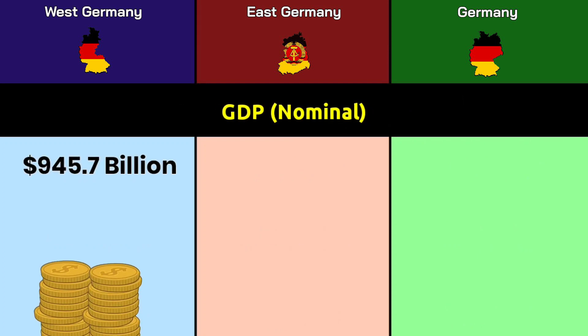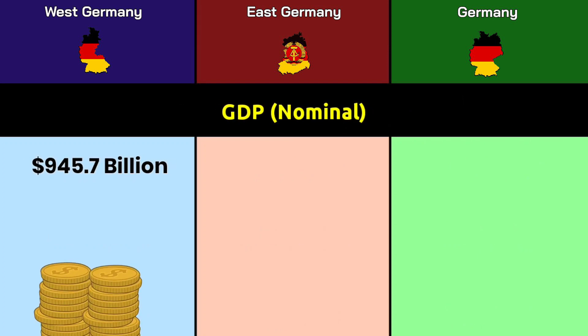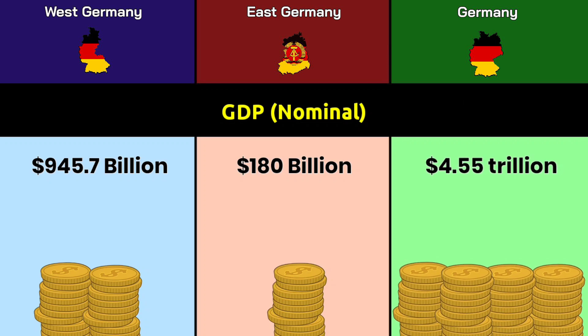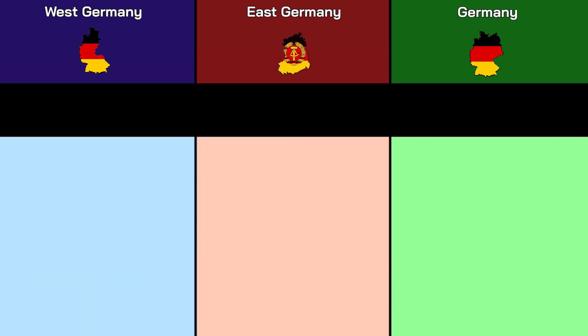GDP nominal: West Germany had 945.7 billion dollars, East Germany had 180 billion dollars, and modern Germany has 4.55 trillion dollars.